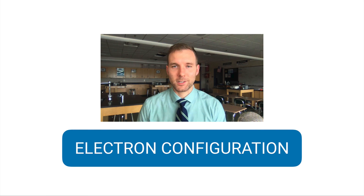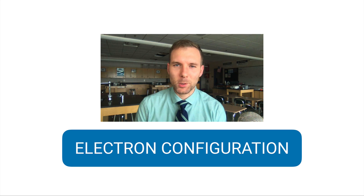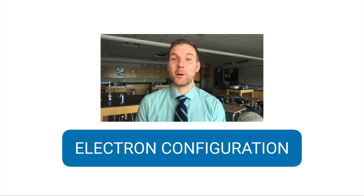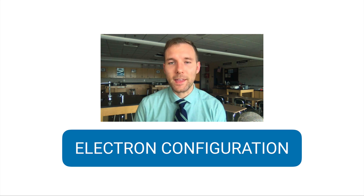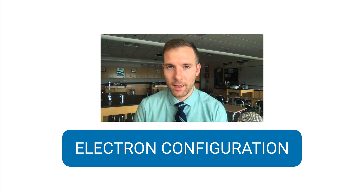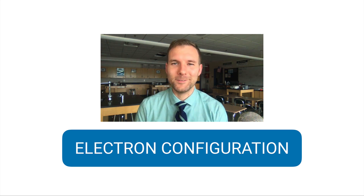There's tons of information in electron configuration, but why is this in the periodic table unit? It's here because the periodic table helps us figure out how electrons are laid out in the atom. I hope this is helpful.